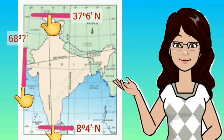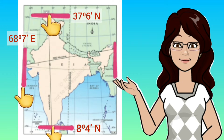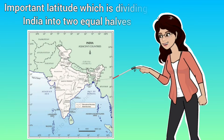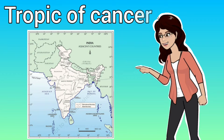Now, the longitude touching the westernmost point of our country is 68 degrees 7 minutes east, whereas the longitude touching the easternmost part of our country is 97 degrees 25 minutes east. There is one more important latitude which is dividing India into two equal halves — the Tropic of Cancer, and its value is 23 degrees 30 minutes north.